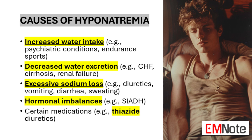These conditions are often associated with elevated ADH levels, exacerbating the problem. Sodium loss can also contribute to hyponatremia. This can occur through various routes, including renal losses — often due to diuretic use — gastrointestinal losses from prolonged vomiting or diarrhea, or excessive sweating. Hormonal imbalances, particularly the syndrome of inappropriate antidiuretic hormone secretion (SIADH), can lead to increased water retention by the kidneys, resulting in dilutional hyponatremia.